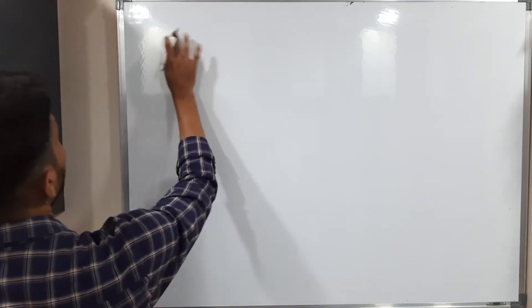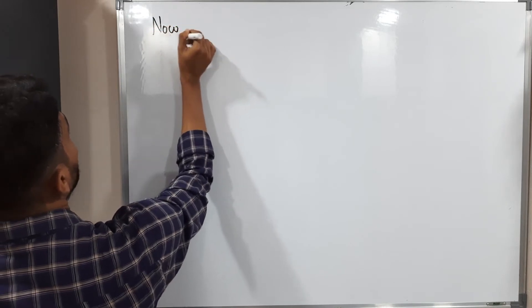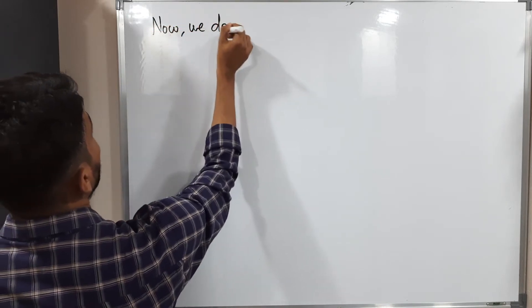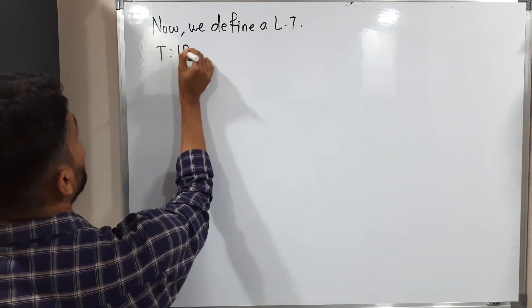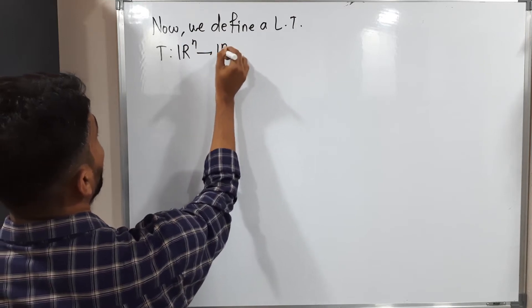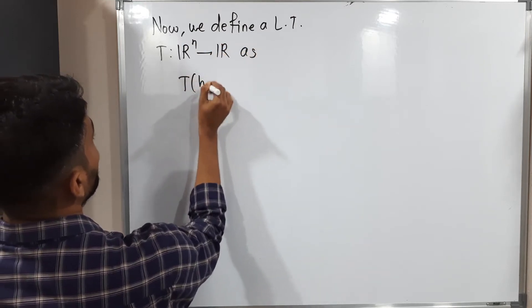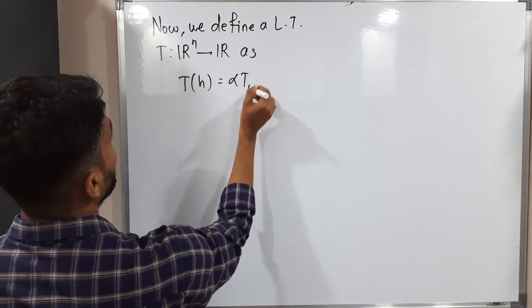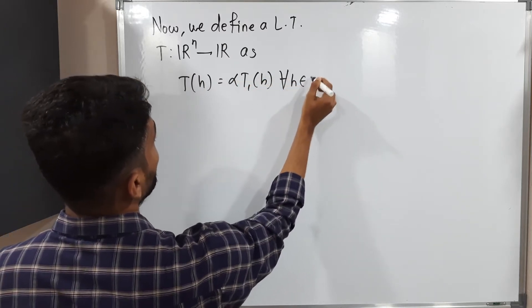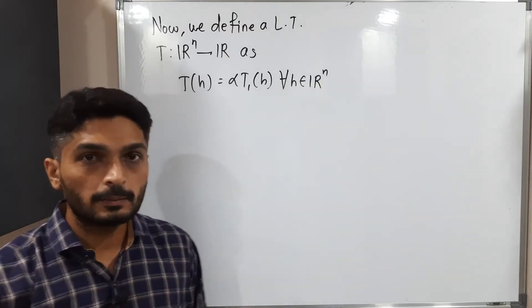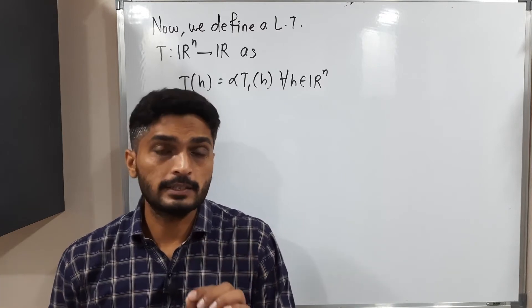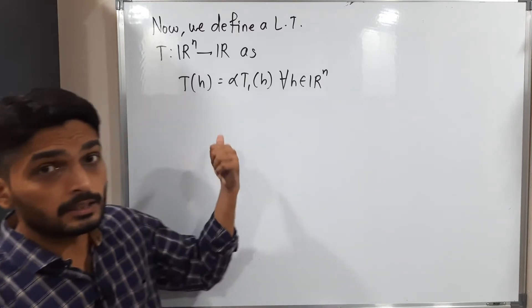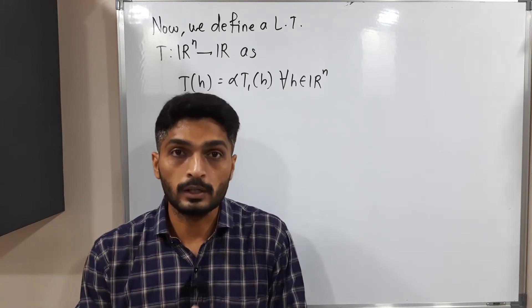Now we define a linear transformation T from ℝⁿ to ℝ as: T(H) = α·T1(H) for all H belonging to ℝⁿ. We are going to prove that αF is differentiable at A and that this T which we have just defined is the required total derivative.